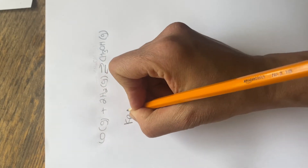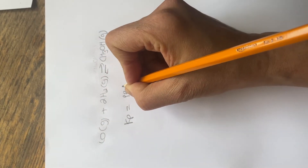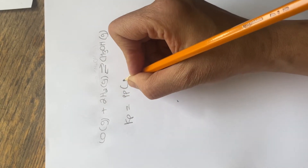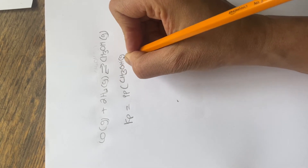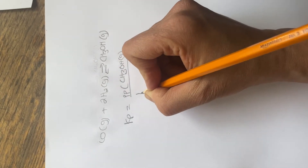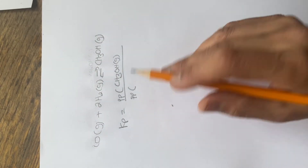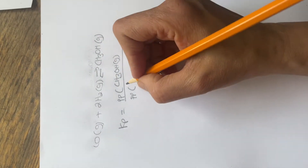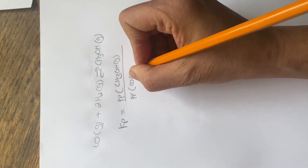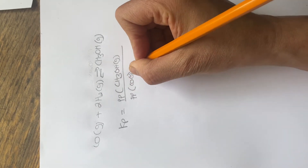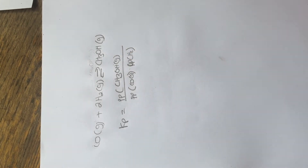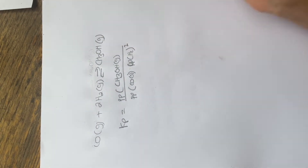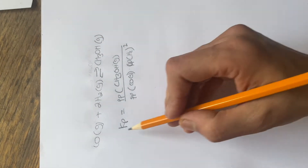The Kp expression is: Kp equals the partial pressure of your products, so it'll be the partial pressure of CH₃OH(g), divided by the partial pressure of CO — you can represent partial pressure with a big P or a small p — times the partial pressure of H₂. Because there are two moles of H₂, you square that.